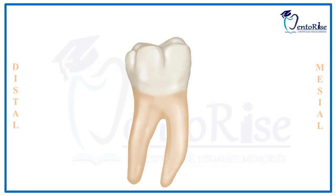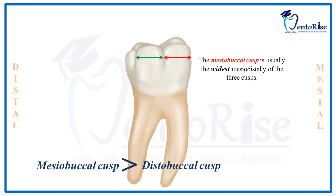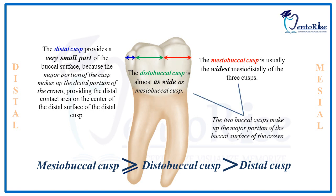Comparing the sizes of these cusps: the meso-buccal cusp is the widest meso-distally, and the disto-buccal cusp is almost as wide as the meso-buccal cusp. However, the distal cusp provides only a very small part of the buccal surface, as the majority of the buccal surface meso-distally is made up by the meso-buccal cusp and the disto-buccal cusp, as seen in the figure.